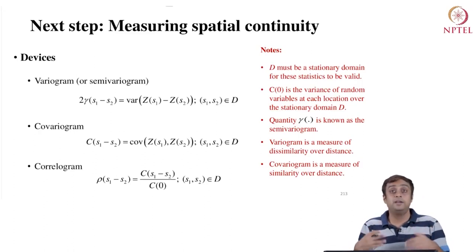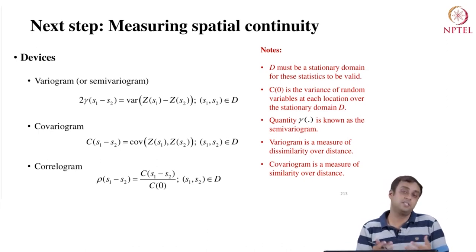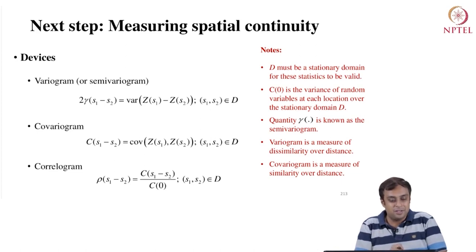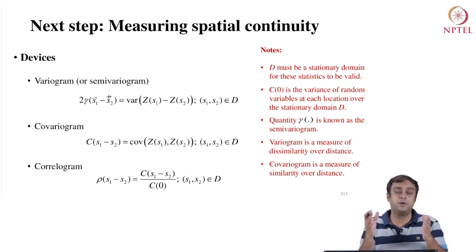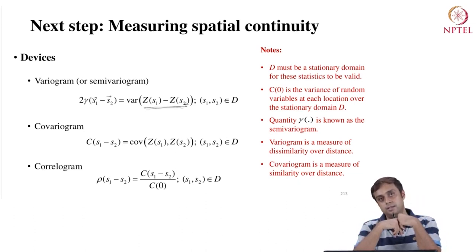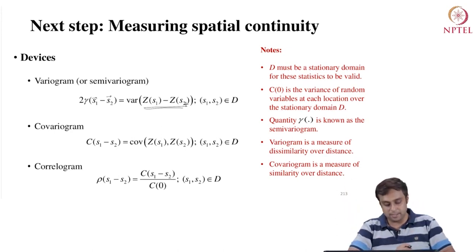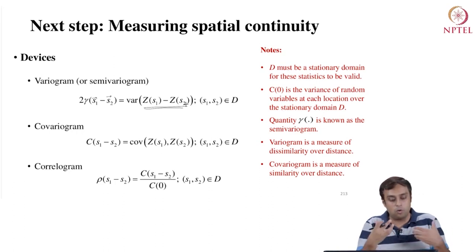Now that we understand spatial contiguity, its utilities and so on, the next step is measuring spatial contiguity. The good news is we have already seen most of the devices involved. First is the variogram — when we studied intrinsic stationarity, we specified a variogram: 2γ(s1 − s2) equals the variance of the first difference between values observed at that distance. We also looked at the covariogram, which is the covariance of values observed at any two locations in space, and the correlogram, which is the correlation analog — just as we move from covariance to correlation in univariate statistics, we move from a covariogram to a correlogram.